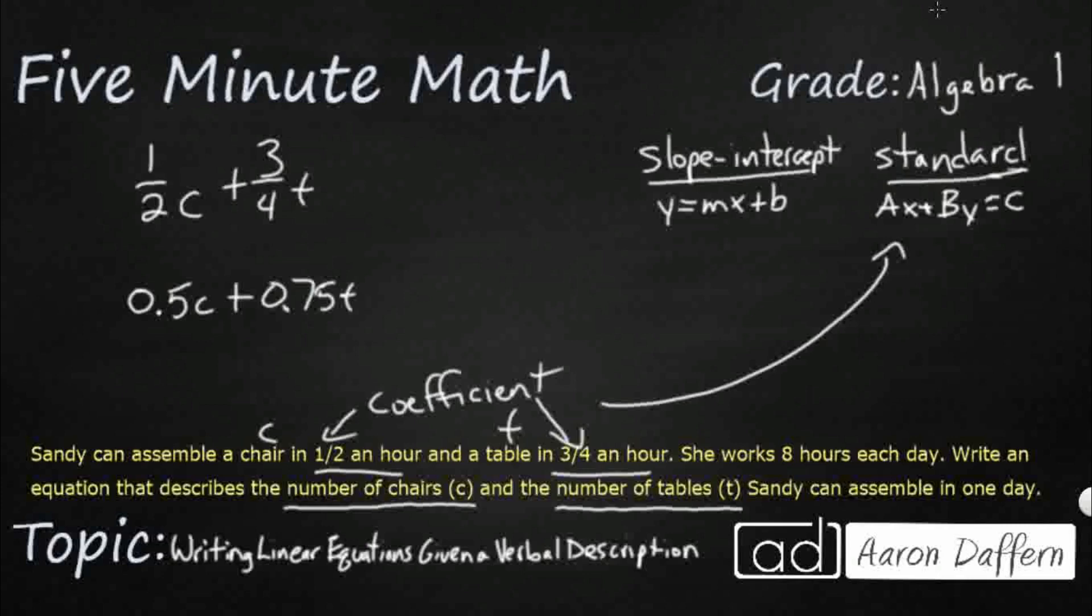So that's going to get my two variables and then my two coefficients. Now, what am I doing with this eight? Well, if I'm trying to figure out the number of chairs and the number of tables she can assemble in one day, multiplying both of those by either the one half or the three quarters, well, to me, that looks like that is going to be my C.